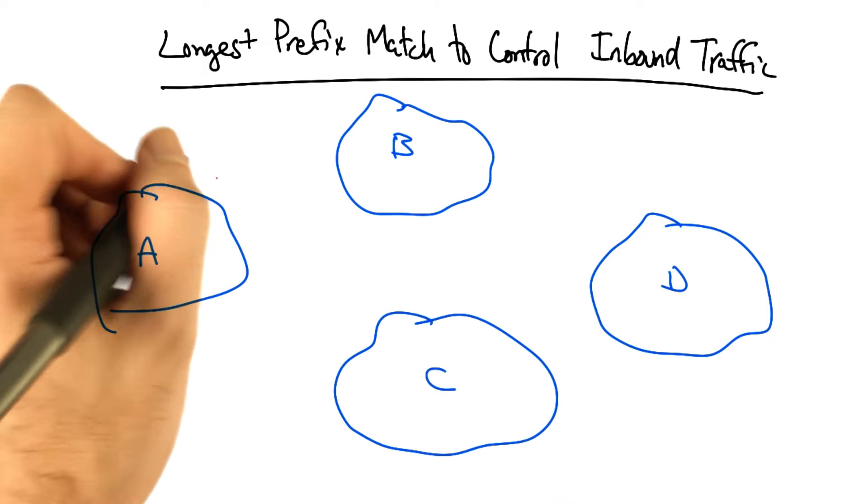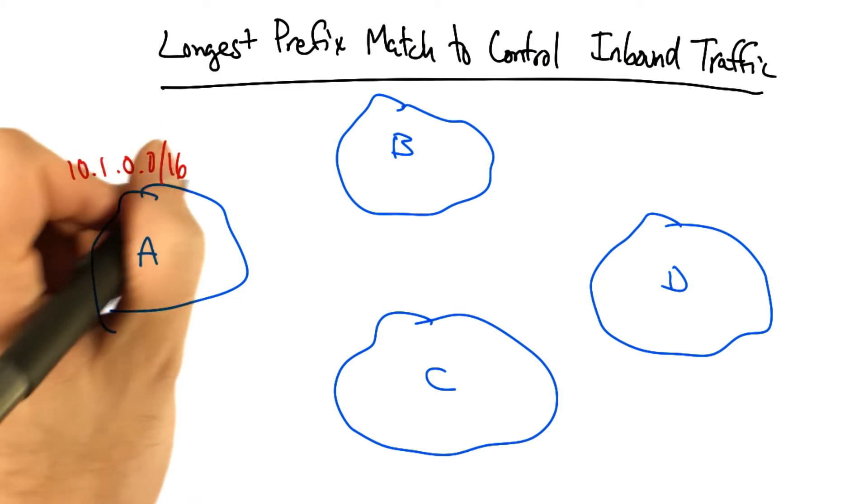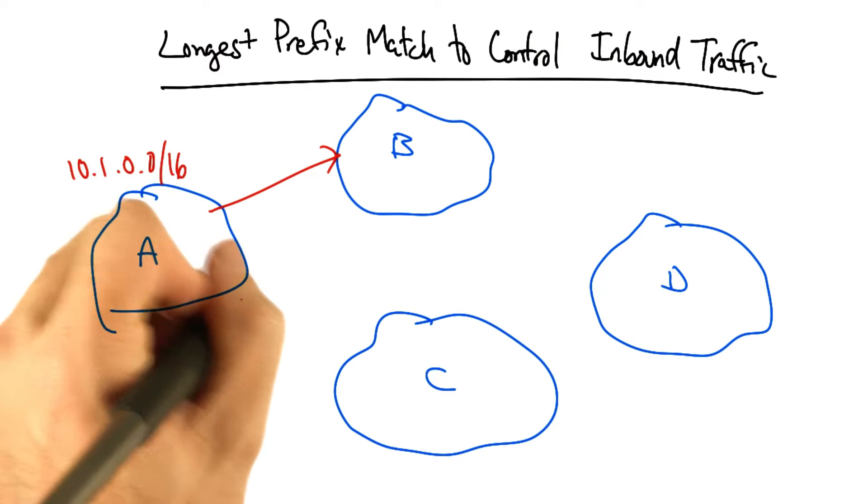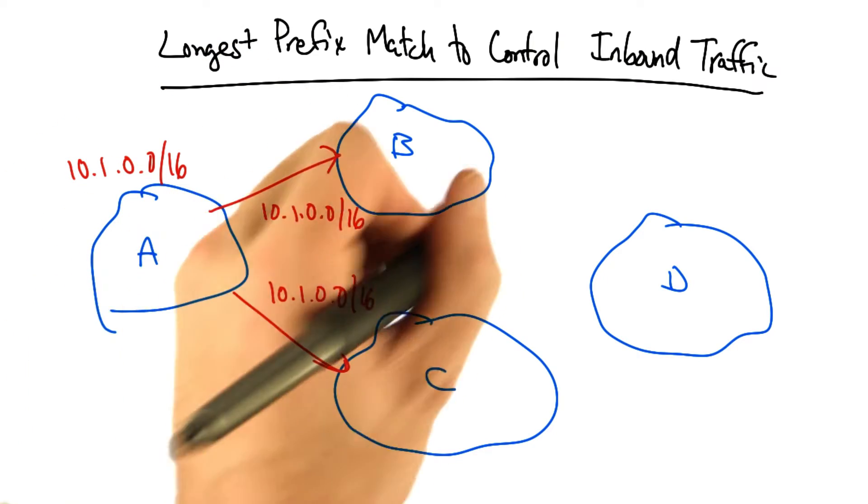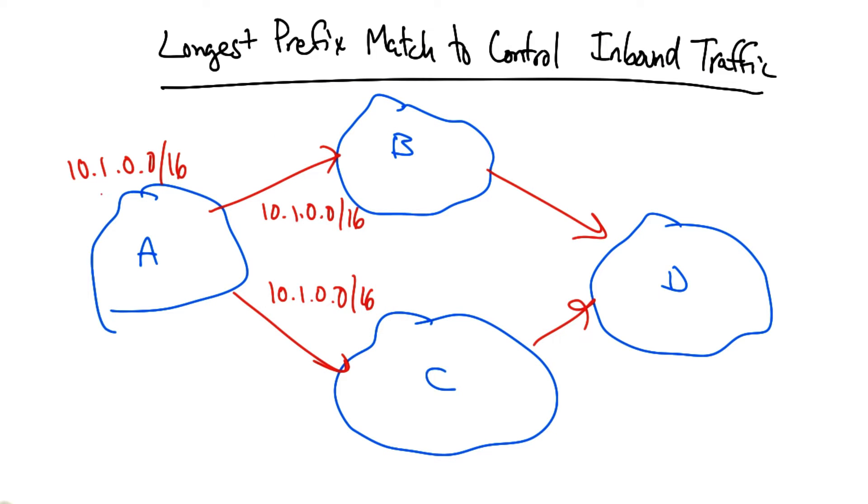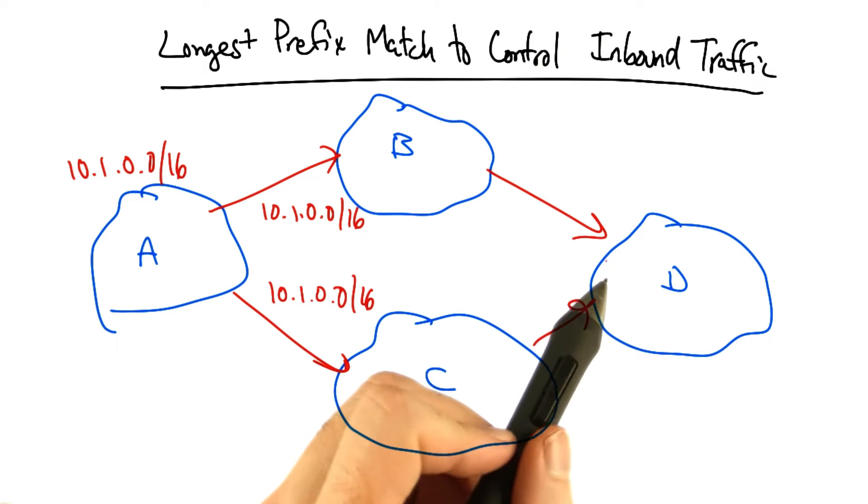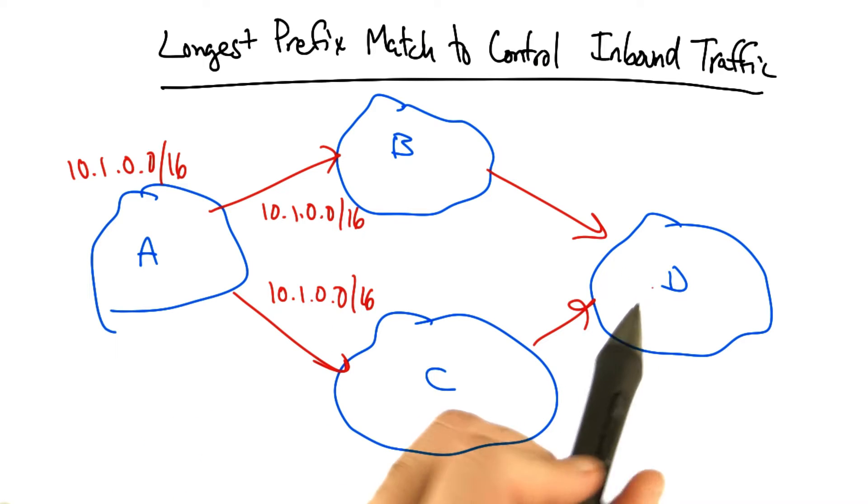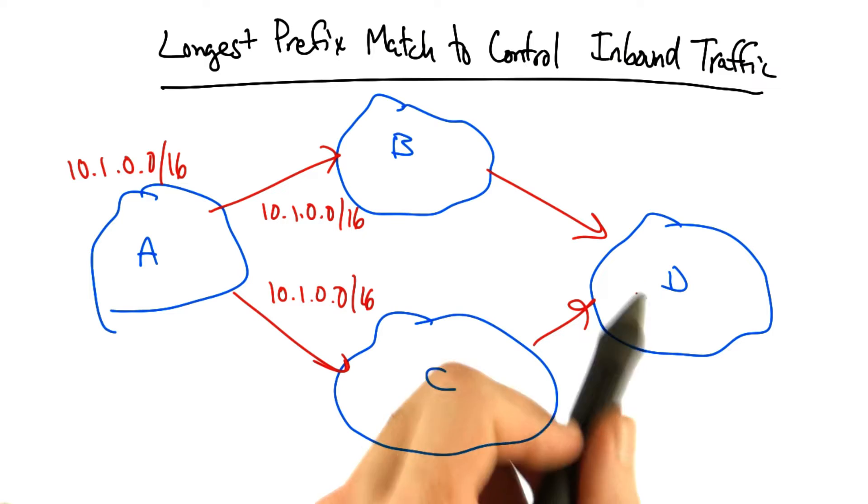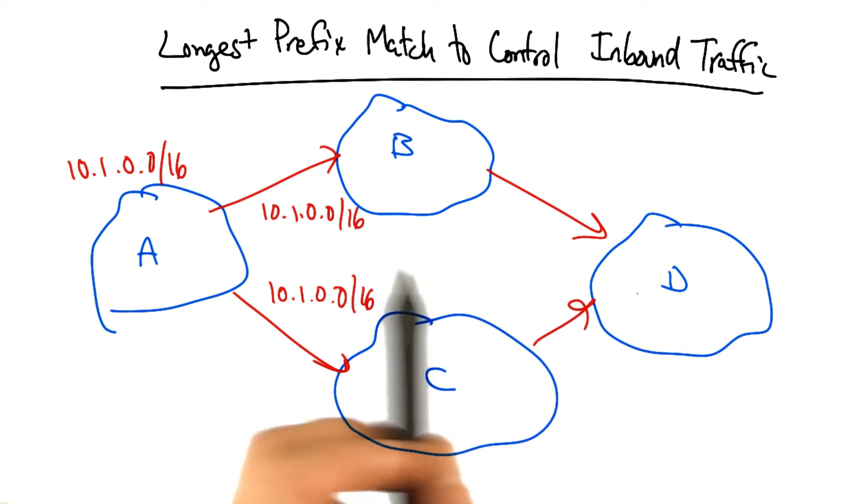Suppose that ASA owns 10.1.0.0 slash 16. It might advertise that prefix out both of its upstream links, and that route might similarly be advertised further upstream. Now of course, as we know from a previous lesson, given the advertisement of one prefix upstream, ASD is going to pick one best BGP route along which to send traffic back to A.